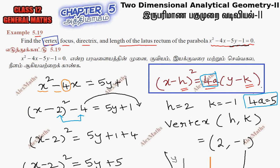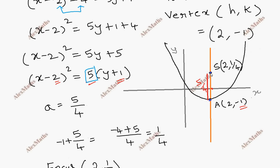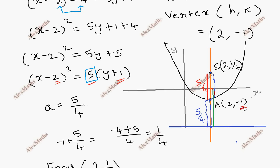Next, the directrix. In the diagram, this is the vertex and this is the focus. The distance from vertex to focus is 5 by 4. The directrix is a horizontal line on the opposite side. This distance is 5 by 4 below the vertex. The vertex is already at minus 1, so going down 5 by 4 gives minus 1 minus 5 by 4, which equals minus 9 by 4. So the directrix passes through the point 2, minus 9 by 4.